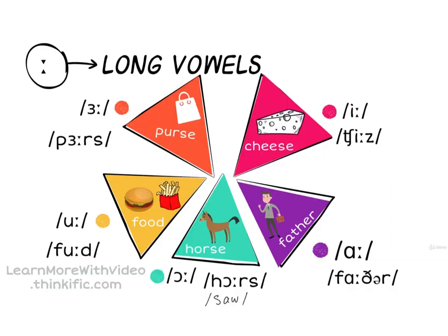Long vowels: اي — مثل... ا — مثل... ا — مثل... ا — مثل purse. أركزوا هنا، في saw لا، ما في صوت و. So it's not سو، it's saw.